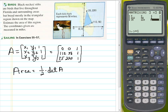I'm going to get out of the matrix editor, and now we can calculate. So 1 half is 0.5.